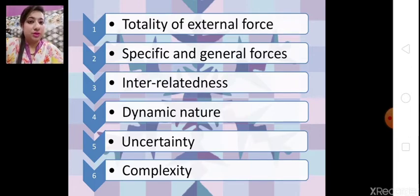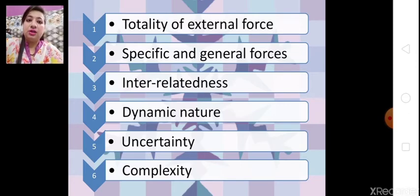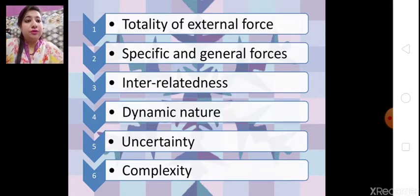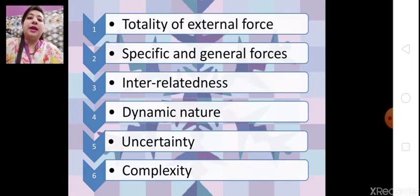To summarize: number one is totality of external forces; second is specific and general forces. External forces divide into specific — which affect only a specific unit like import-export business when custom duty increases — and general, which affect all businesses and companies, like an increase in tax or any law passed by the government.